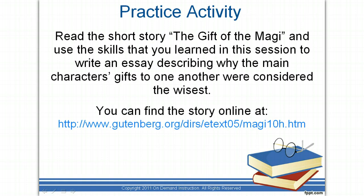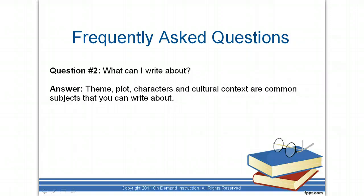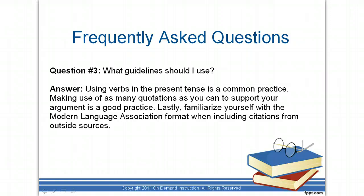Now it's time to develop this skill further. Read the short story 'The Gift of the Magi' and use the skills you've learned in this session to write an essay describing why the main characters' gifts to one another were considered the wisest. You can find this story at the following link. A good start is to realize that you are making a written argument — make sure you have something specific to say about the text. Common subjects include theme, the plot, and characters. Write verbs in the present tense, use as many citations as you can to support your argument, and familiarize yourself with the Modern Language Association format when including citations from outside sources.